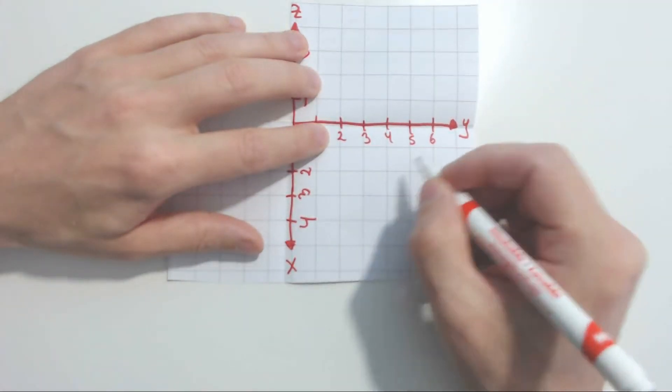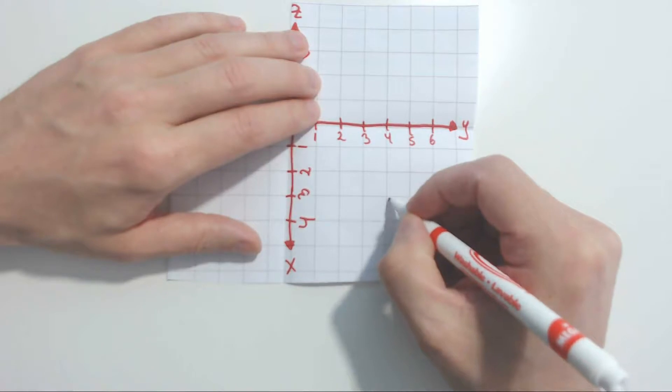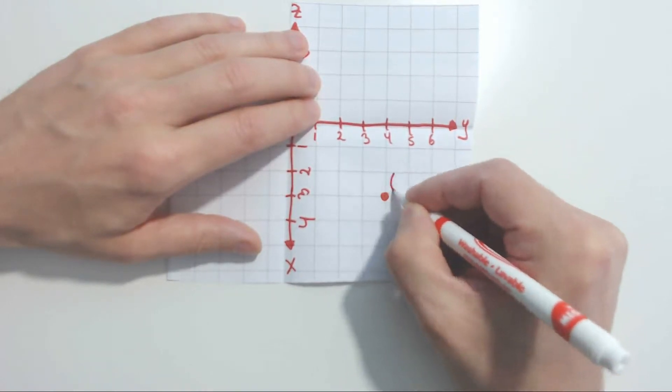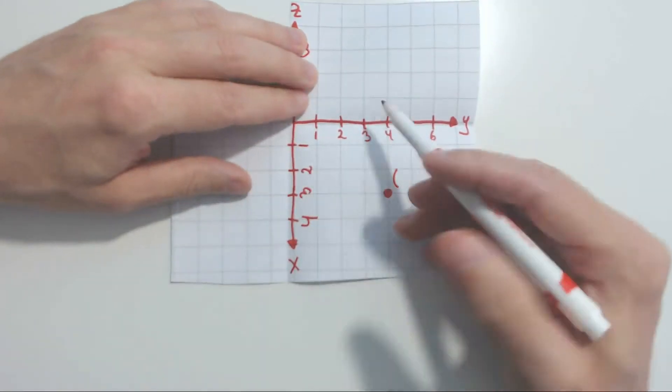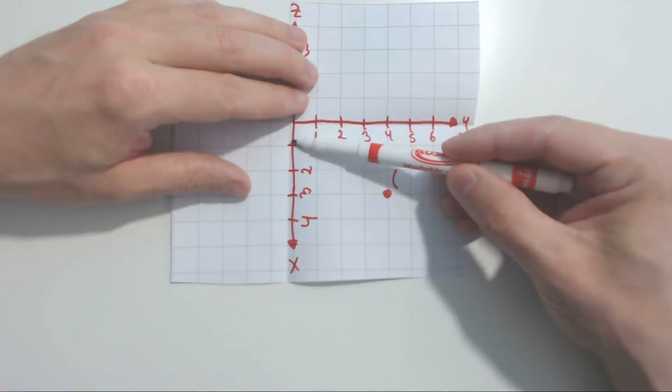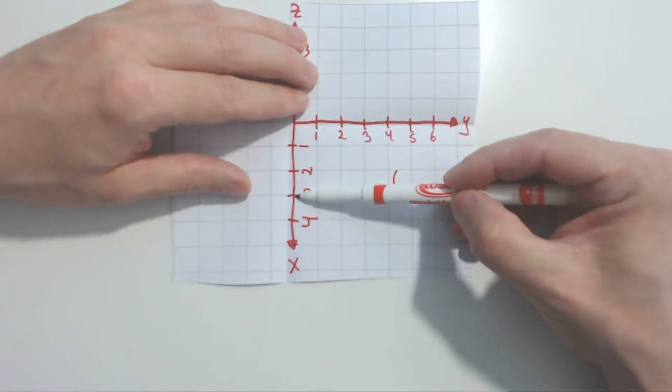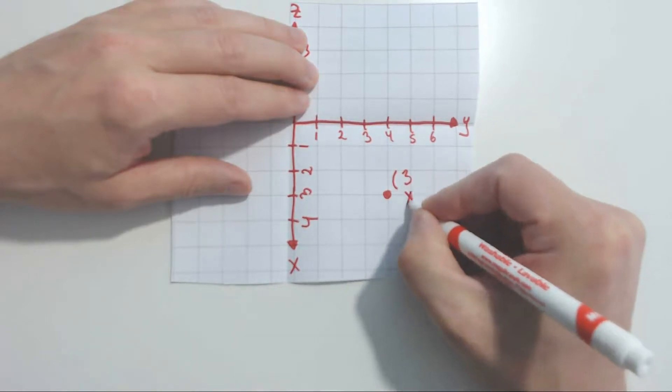So I'm going to mark some point that I choose in here. I'm going to say, for example, this point right here. For the X, I count off along the X axis. Look. 1, 2, 3. That's my X coordinate. I'm going to put a 3 in this position. That's my X.